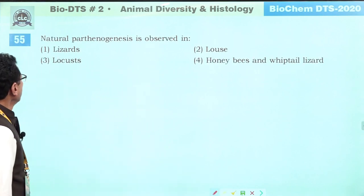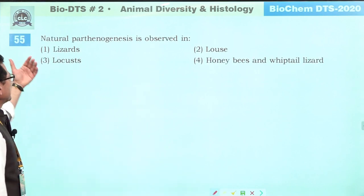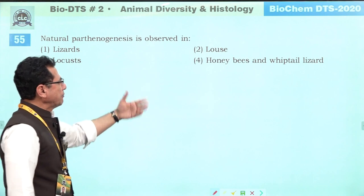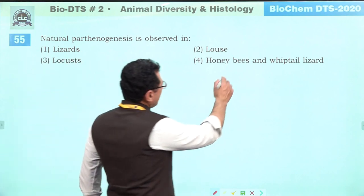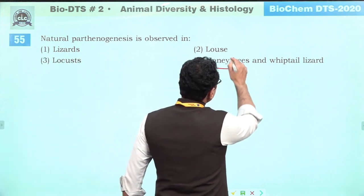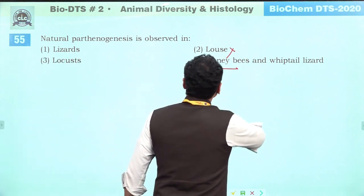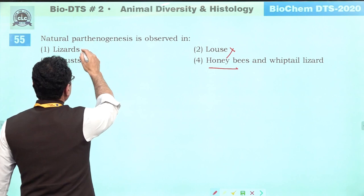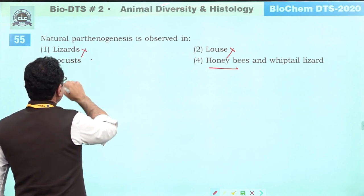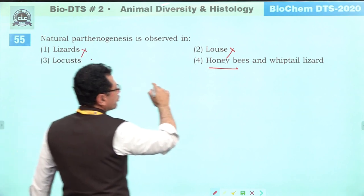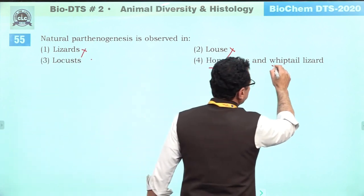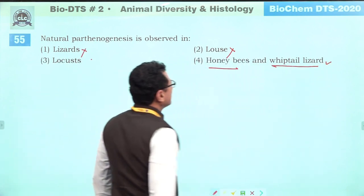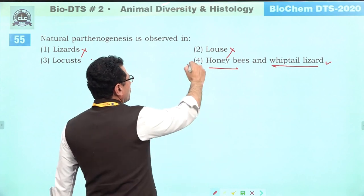Natural parthenogenesis — the best example is honeybees. It also occurs in some lizards (like whiptail lizard), which is the NCRT example. Answer is four.